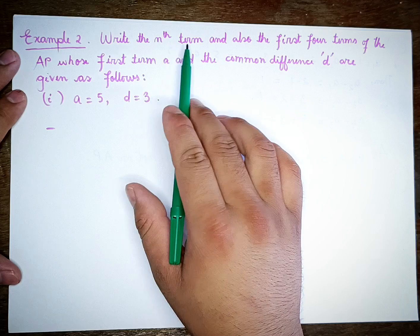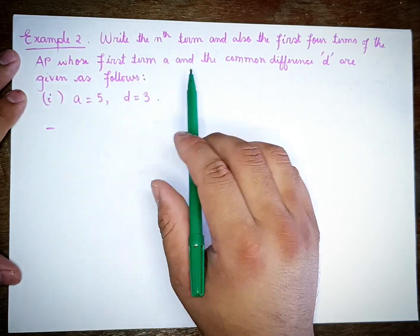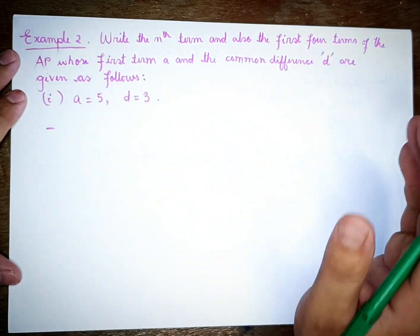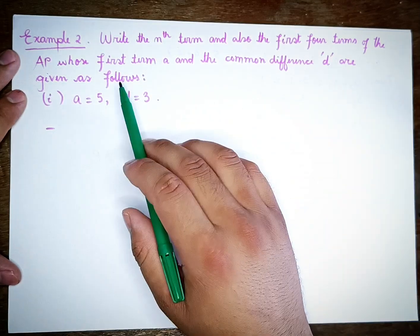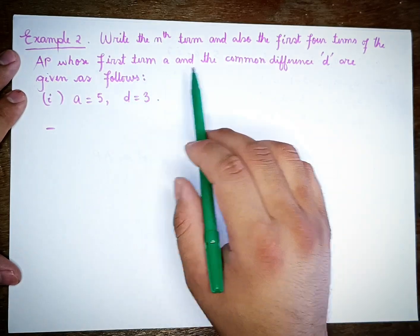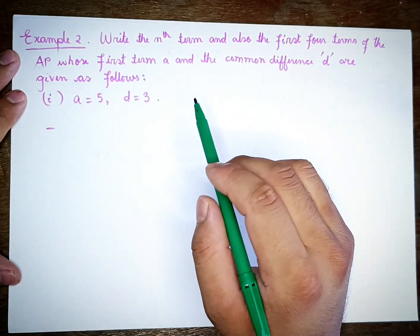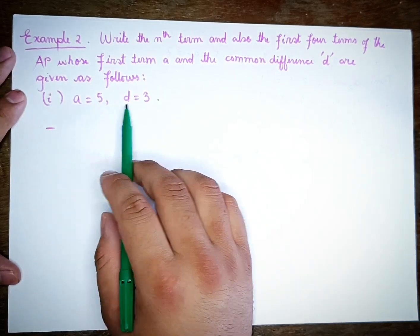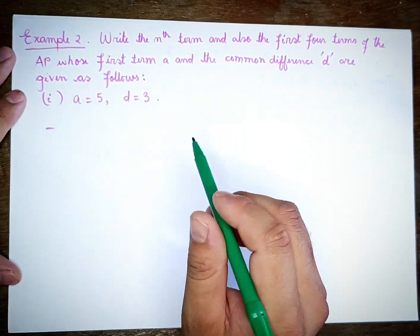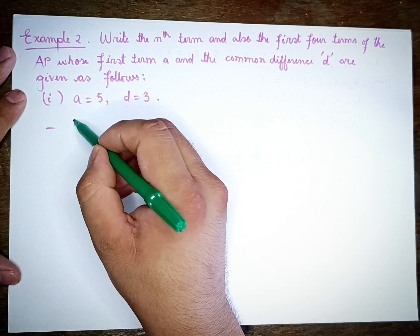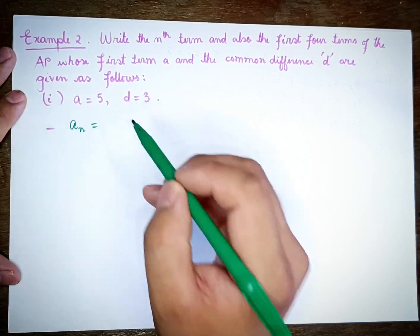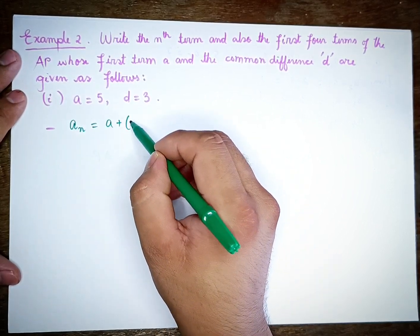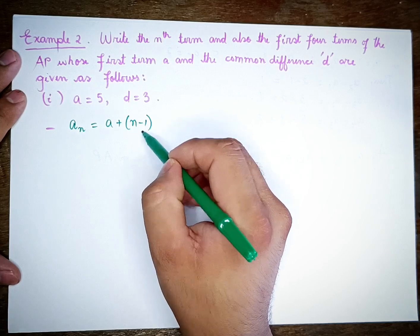Find the first four terms A1, A2, A3, A4. The Nth term formula is: Nth term equals A plus N minus 1 whole multiplied by D.